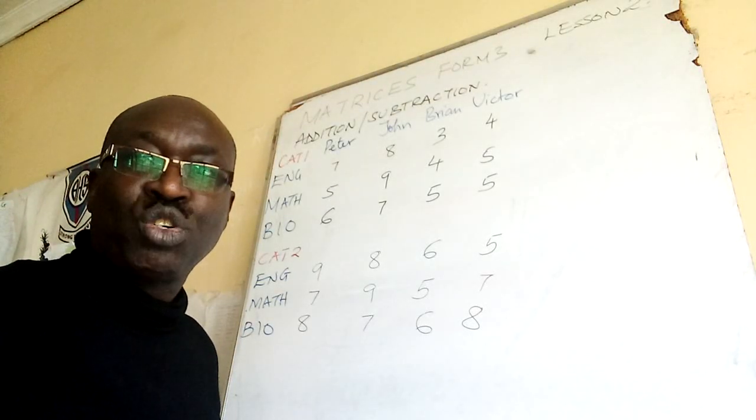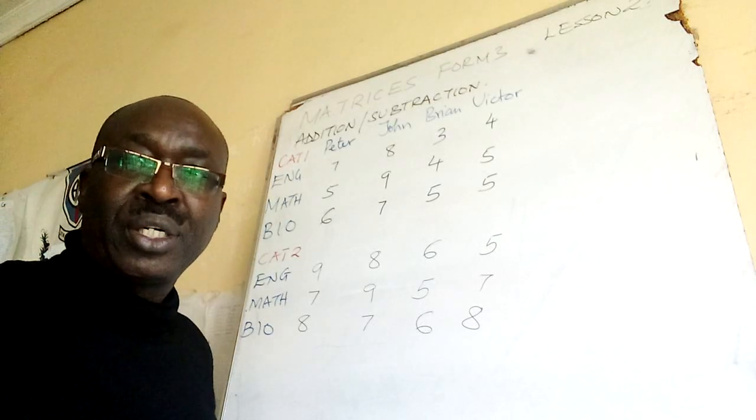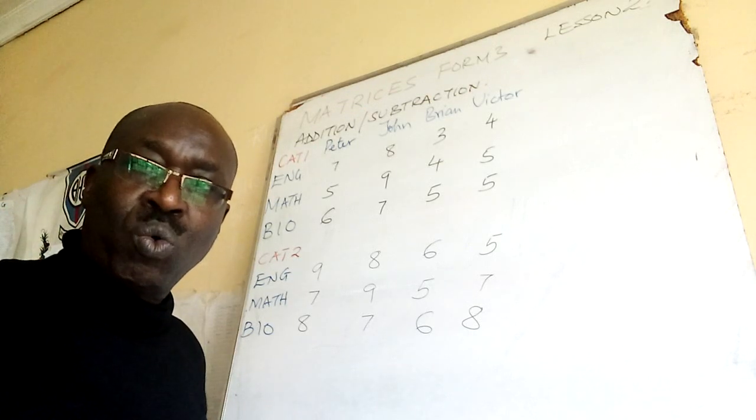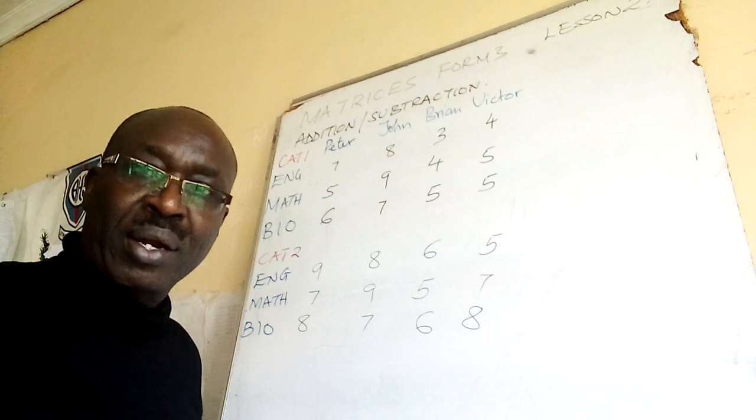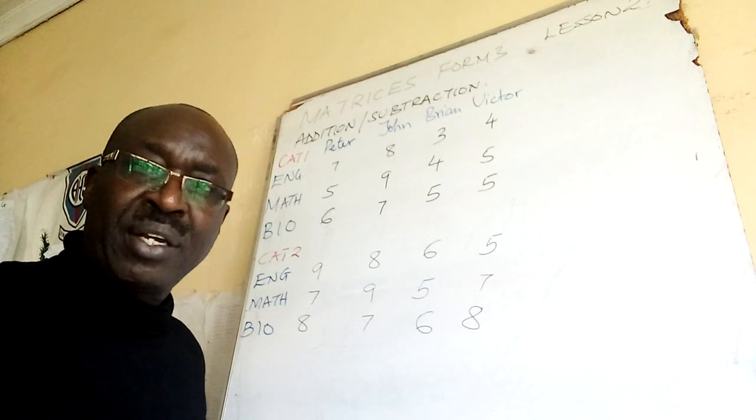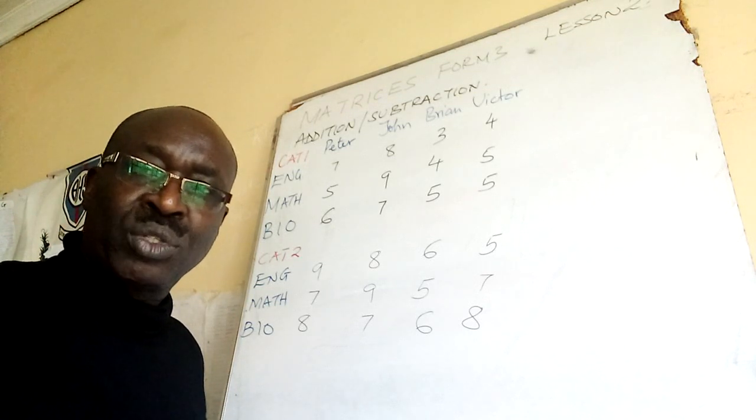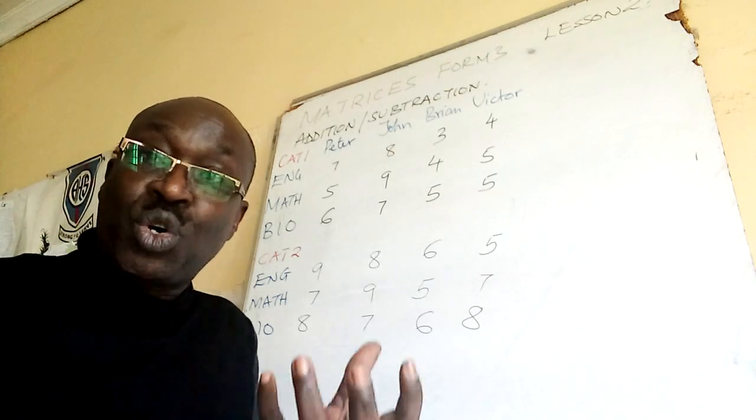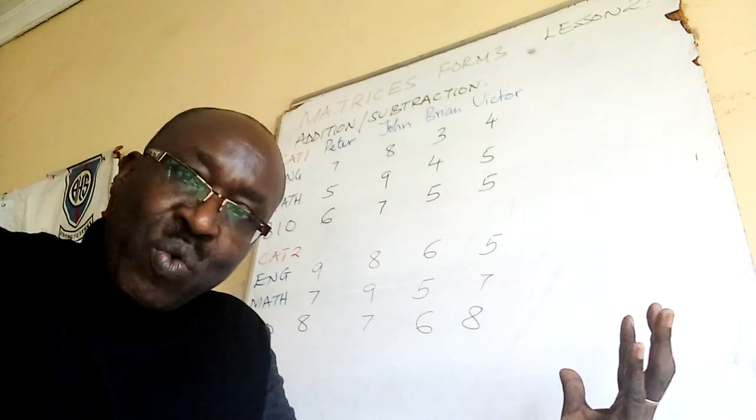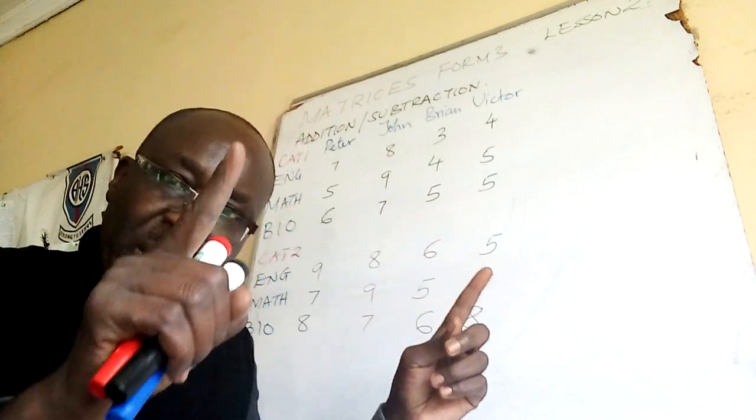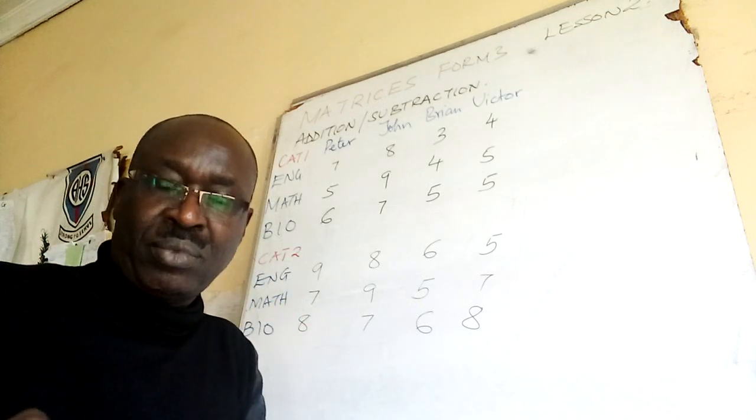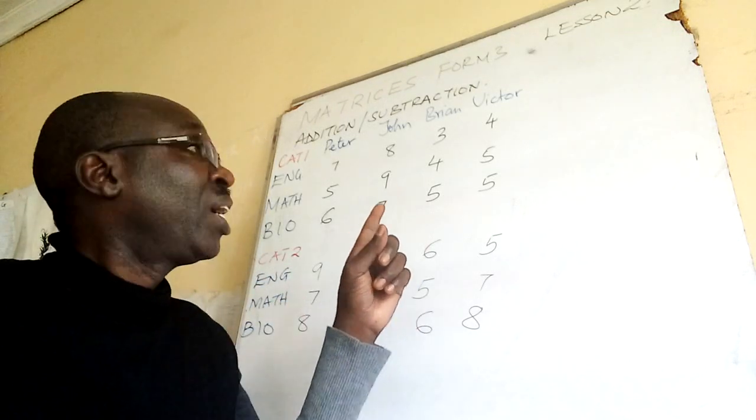Welcome boys and girls to our lesson two in matrices form three. I'm doing matrices from scratch form three. First we saw what is a matrix in lesson one. A matrix is just an arrangement of numbers in a given bracket. You can tabulate things, you can have figures in a table. But when we extract those figures and put them in a bracket, now that is called a matrix. I have a table here.